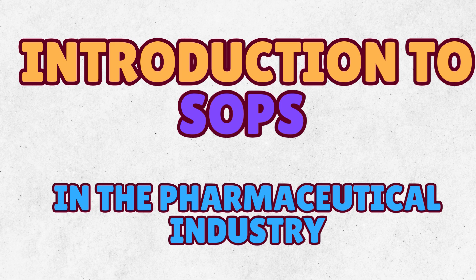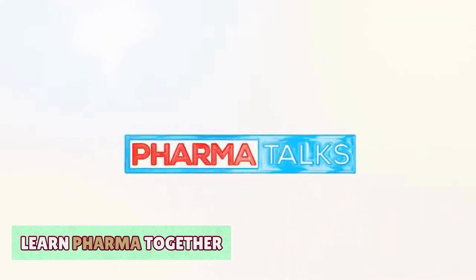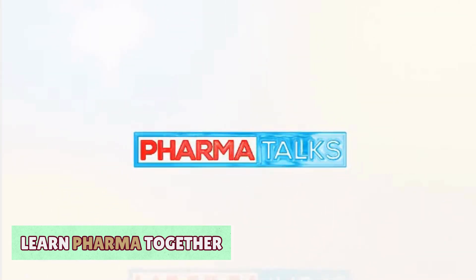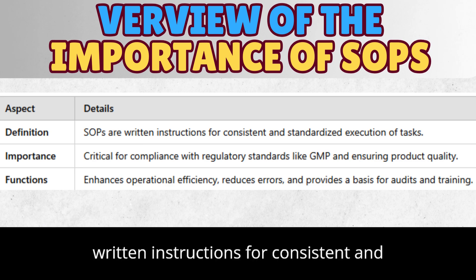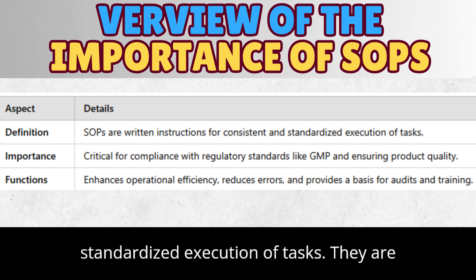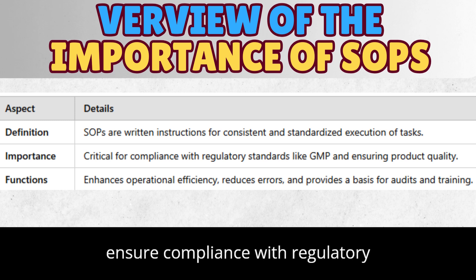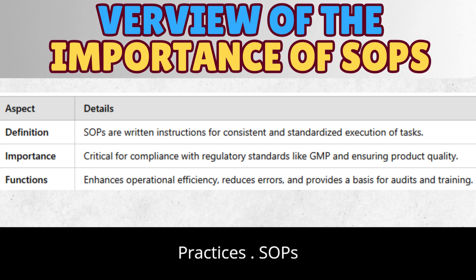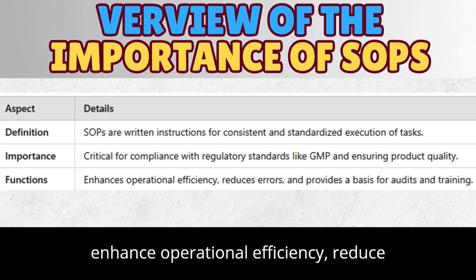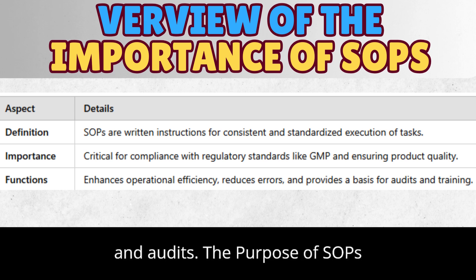Introduction to SOPs in the Pharmaceutical Industry. Standard Operating Procedures, SOPs, are formal written instructions for consistent and standardized execution of tasks. They are crucial in the pharmaceutical industry to ensure compliance with regulatory requirements such as good manufacturing practices, GMP. SOPs enhance operational efficiency, reduce errors, and provide a basis for training and audits.